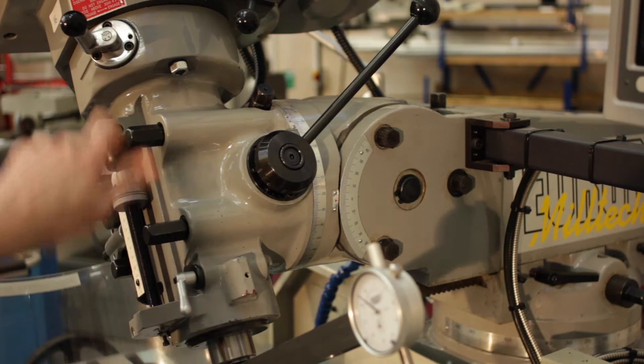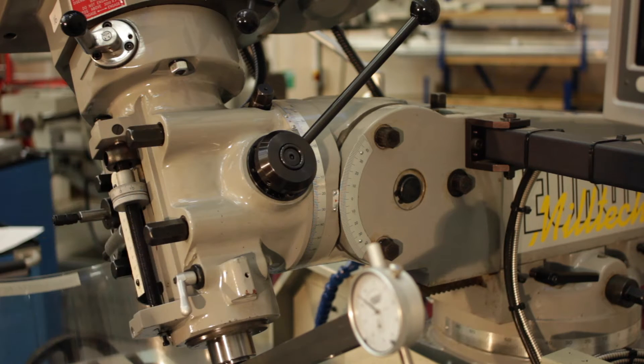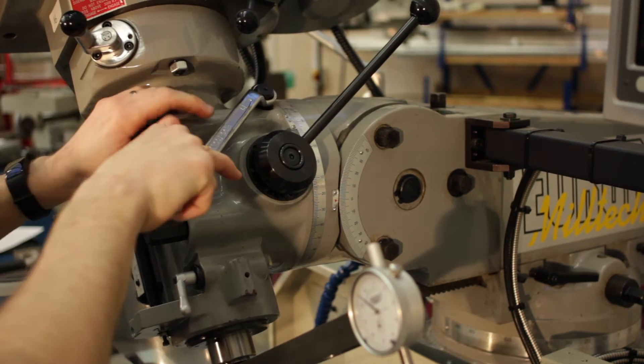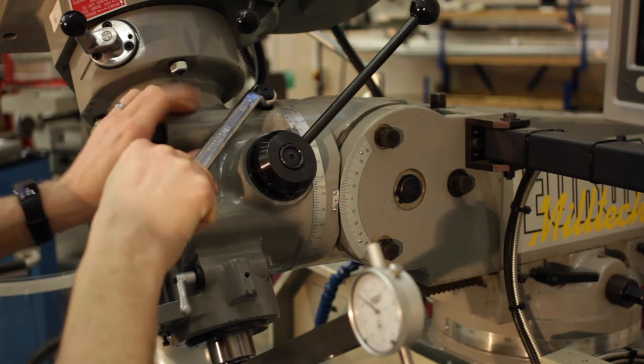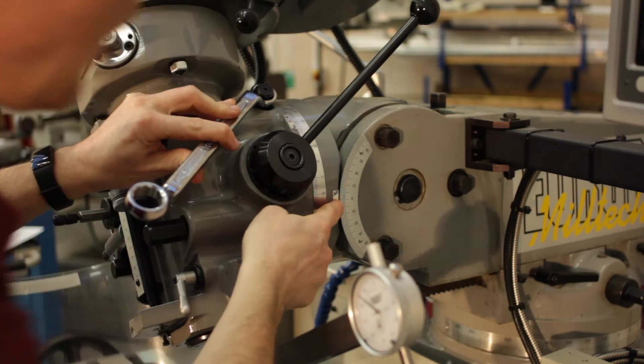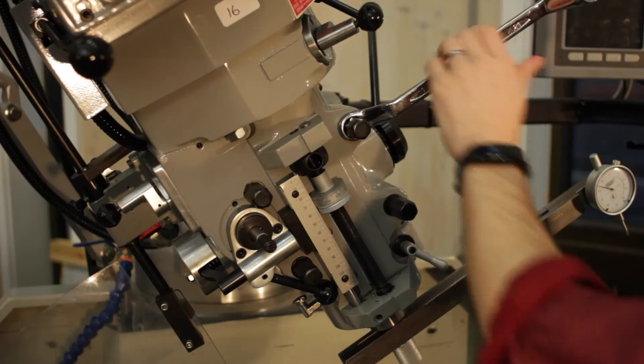First we're going to need to unbolt the four on the front and following that then we can get onto the adjusting bolt on the side which is going to index the head around. The first check we're going to do is make sure that zero lines up, so we're bringing it roughly in line.